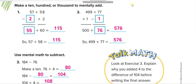Next: 57 plus 58. You can add directly, or do it mentally. Look at the numbers closely — subtract 2 from 57 and add 2 to 58. This gives 55 and 60, both rounded figures. Add them: 55 plus 60 equals 115. Adding directly also gives 115.